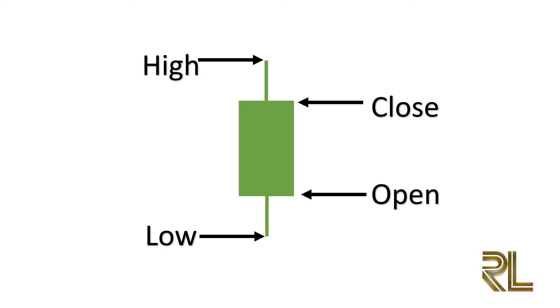The close is the market price at the end of the one hour. The high and low are the highest and lowest prices that were traded within that one hour, respectively.